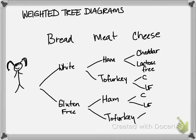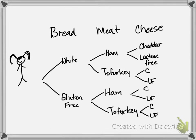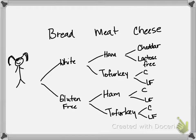Before, we looked at tree diagrams where everything was equally weighted - you had the same chance of getting white or wheat or Italian herb bread, like a one in three chance. But in real life that's not really the case, because if I don't have a gluten allergy I'm not going to get gluten-free bread - it tastes a little like cardboard. So people are not equally likely to choose gluten-free or white bread. Probably there would be an 80 percent chance - 0.8 - of choosing white bread.